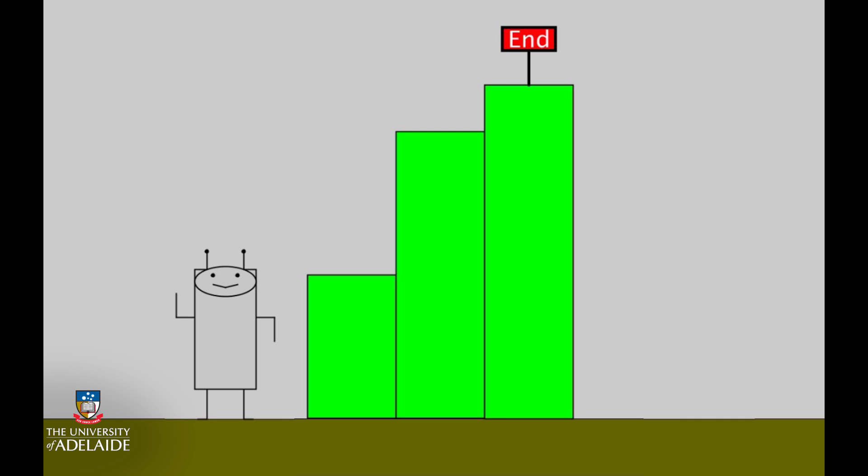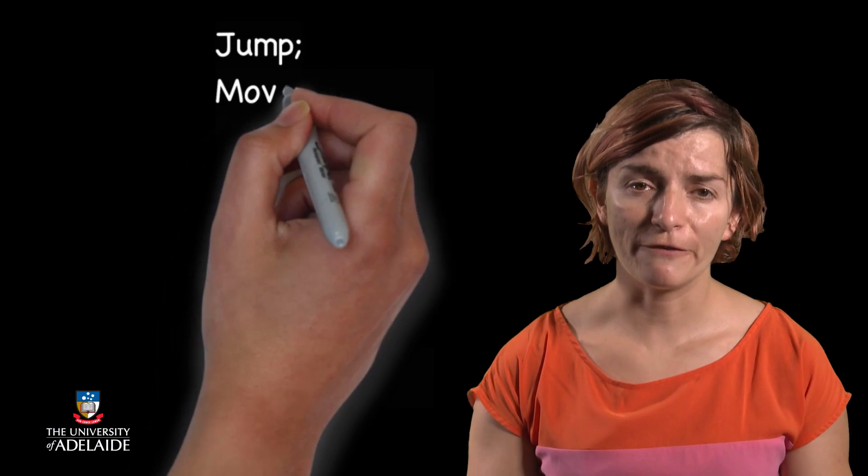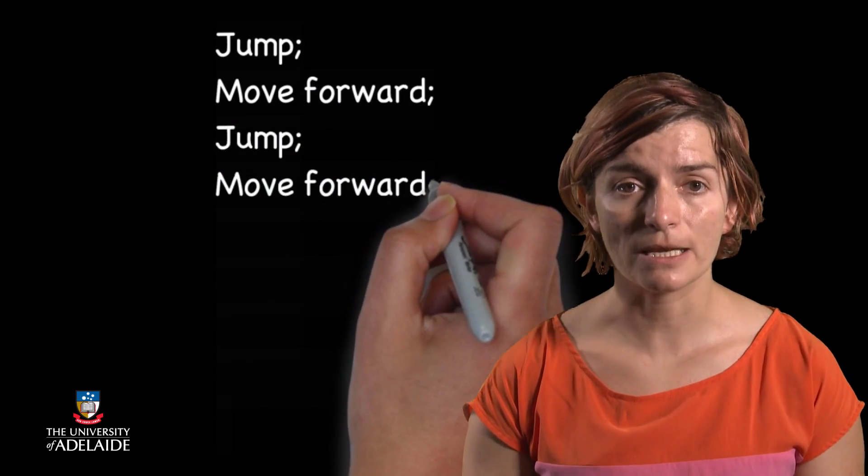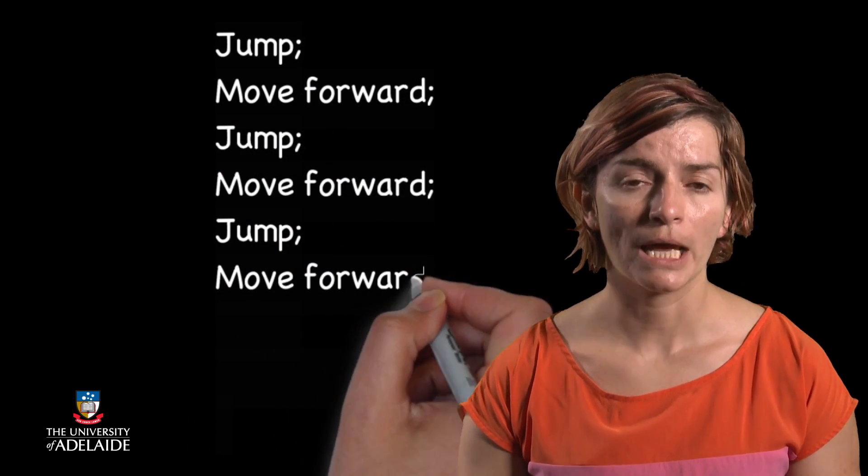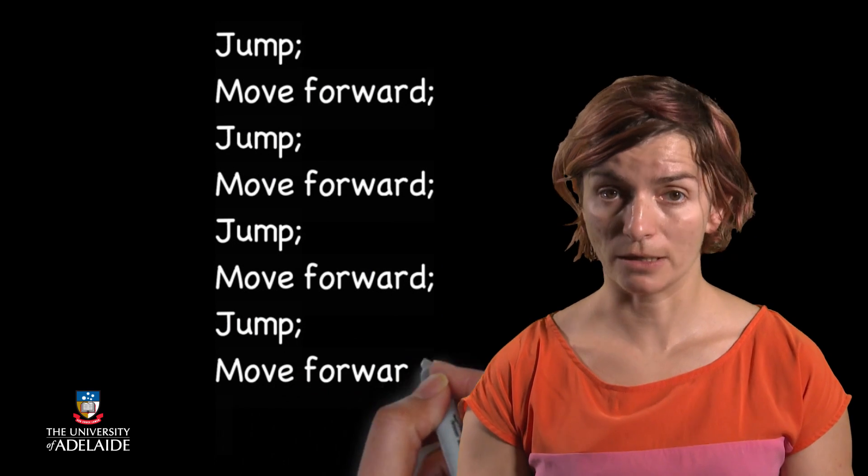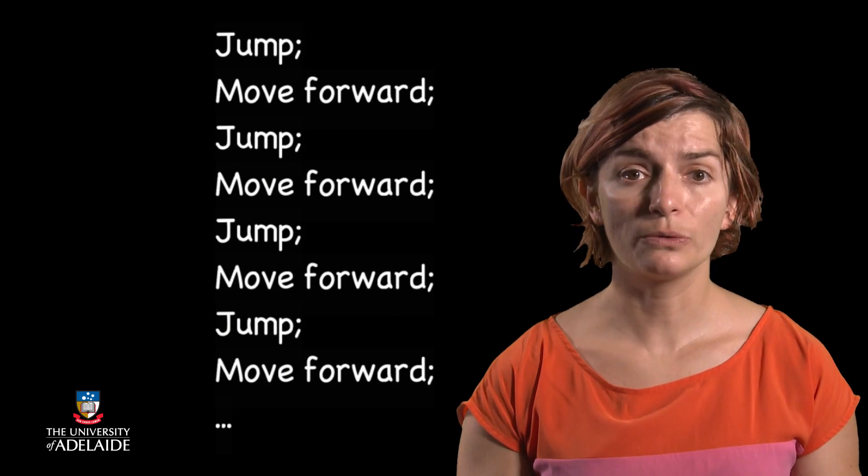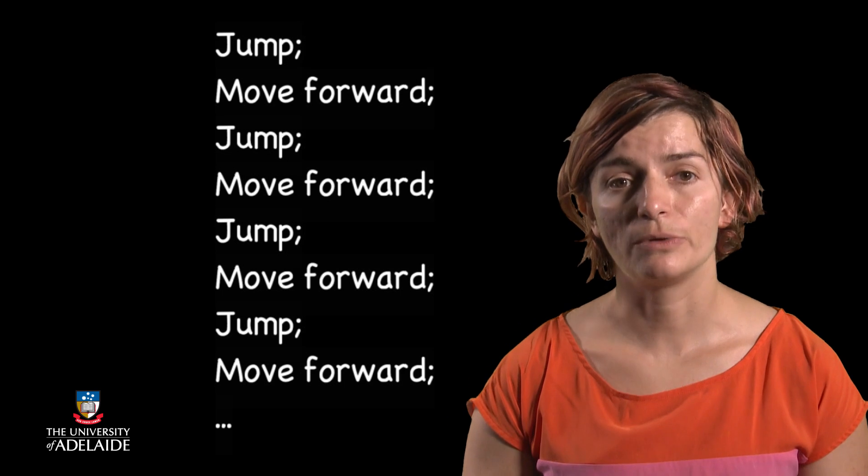In the next problem, we are provided with another, more advanced problem. We can see that for the robot to arrive at the end point, it needs to move through a series of steps such as jumping, moving forward, jumping, moving forward, and so on. We could keep adding instructions for these moves until it completes a solution. However, this would result in a very long sequence of instructions that repeat the same steps over and over again. This is not only repetitive for us as a coder, but also makes it difficult when we, or someone else, wants to read our code.